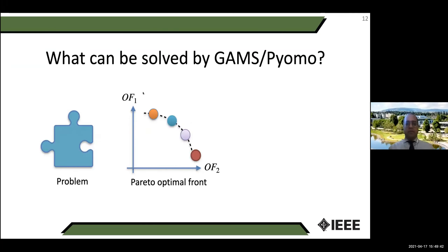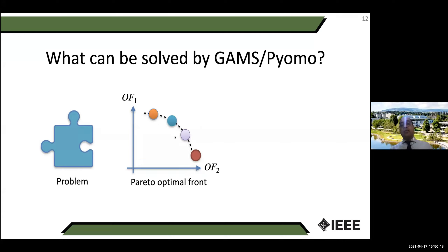One example is the Pareto-Optimal Front. If you have two objective functions and want to maximize both, these tools can provide a set of Pareto-optimal solutions rather than just one. The red solution is better in terms of objective function two, while the orange one is better for objective function one. None of these solutions dominates the others in all aspects, so the decision maker can choose: if you care more about OF1 go with orange, if OF2 go with red, or choose a trade-off like the blue one.